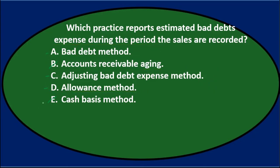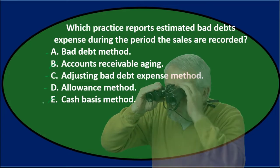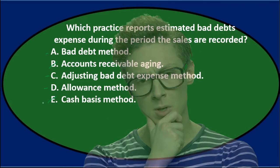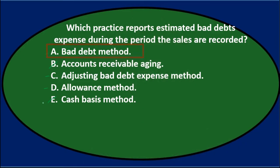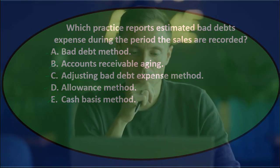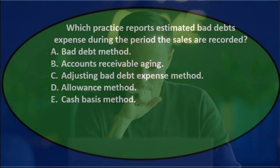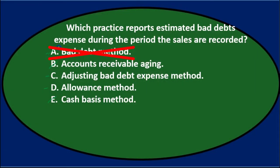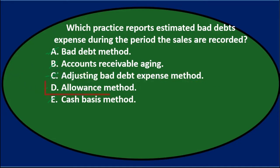Reading through again: which practice reports estimated bad debts expense during the period the sales are recorded? A says bad debt method — it sounds like it could be a method, but it's not really one. The two methods we should know are the direct write-off method and the allowance method. So A doesn't fit. C says adjusting bad debt expense method — that's kind of what we're doing, but it's not the name of a recognized method.